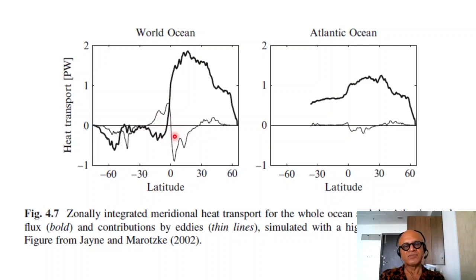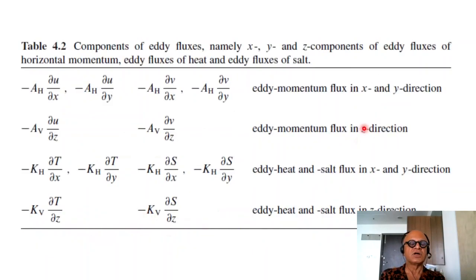So energy is converging here as opposed to the total transport, which is diverging. The Atlantic Ocean has to have northward transport because of the deep water formation taking heat south across the equator. But you can again see eddy contribution is fairly small. Small components of eddy fluxes, namely x, y, and z components of eddy fluxes of horizontal momentum, eddy fluxes of heat, and eddy fluxes of salt.